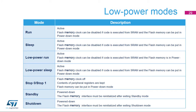The flash memory module supports the following low-power capabilities. In run, sleep, low-power run and low-power sleep modes, clock gating and power-down are supported when code is executed from SRAM. In stop-0 and stop-1, clocks are gated and flash memory can enter power-down mode. In shutdown mode, the power of the flash memory module is gated for both the flash memory and controller. Gating the clock and putting the flash memory in power-down mode significantly reduces power consumption.